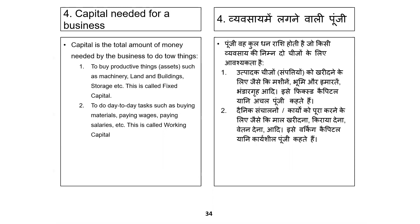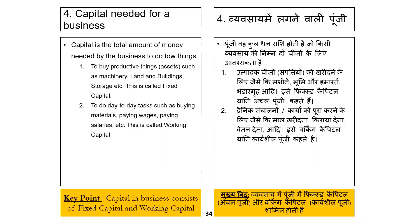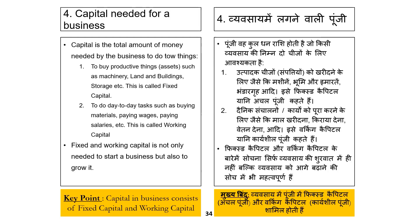So these two types of punji are required in any business — whether it is a service, a product, or a trading company. In VSIM, there are two types of capital: one is fixed capital (achal punji), and the other is working capital (career shield punji). This is the main point of view used across all types of businesses.